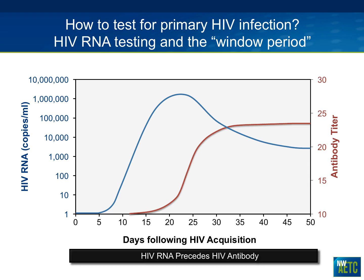The other reason it's difficult for providers is the window period. When people are first infected, it takes about one to two weeks for viral RNA to get into regional lymph nodes and disseminate. Viral RNA is detectable in blood starting around 10 days, peaking around two weeks — and that's when people have maximum symptoms and come into emergency rooms. The problem is that antibodies shown in red don't become detectable for about three weeks using the best antibody test. So there's a window period where RNA is detectable but antibody tests may still be negative.